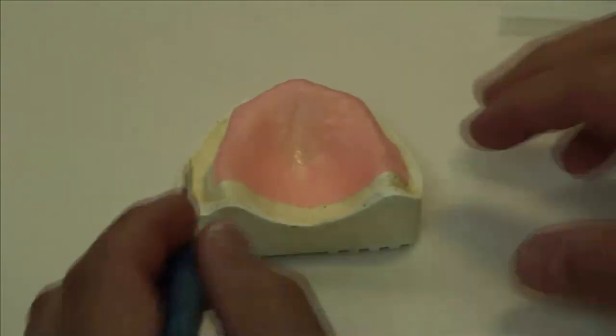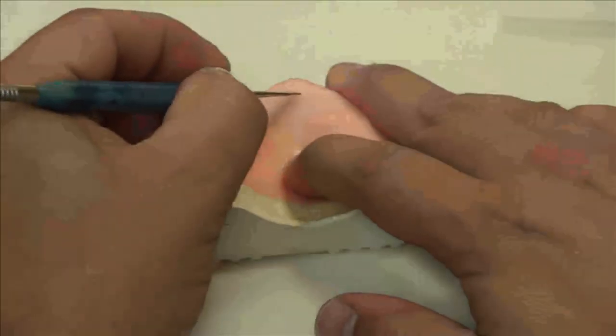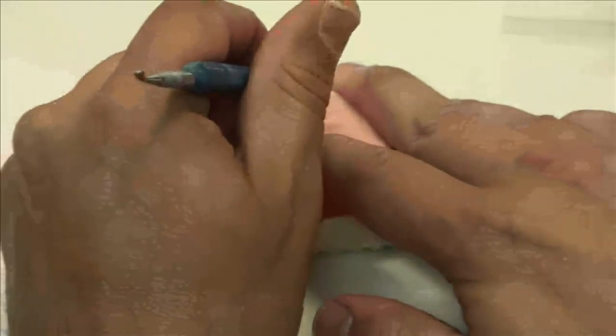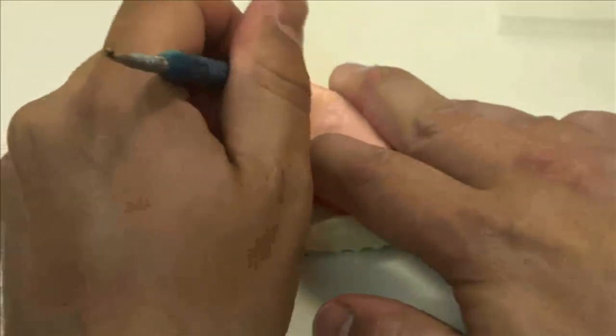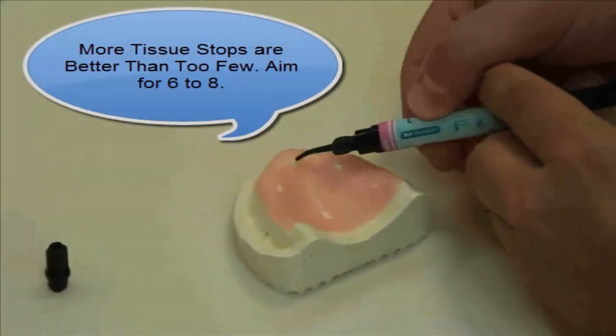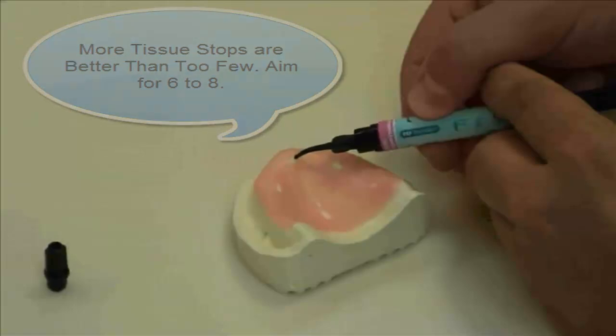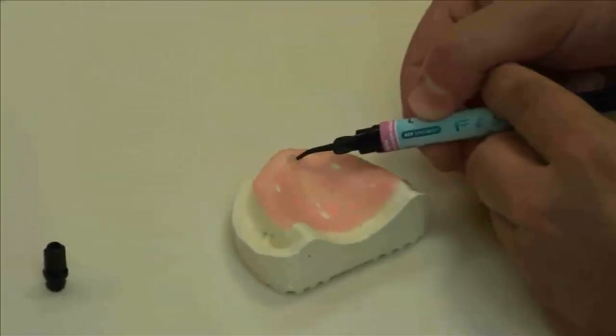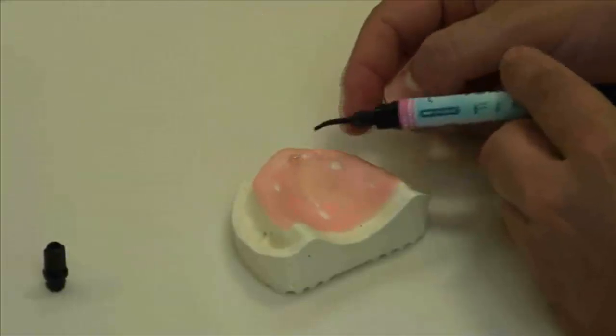The first step in creating tissue stops is to cut rectangular holes into the wax spacer. Place the holes where you would like the tissue support to be in the framework. Using the FiberForce pink light cure resin, fill the holes in the spacer, overfilling only slightly.